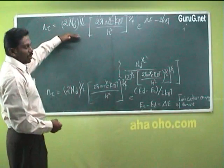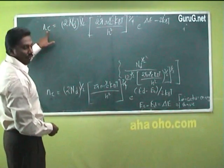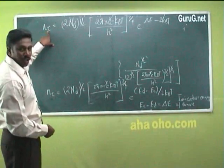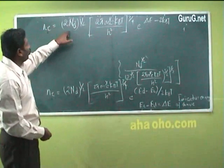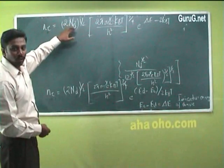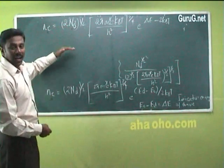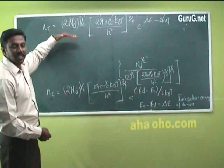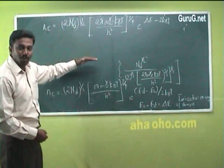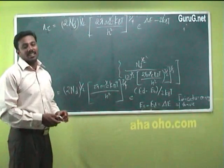From this equation, what we can understand is that the density of electrons in the conduction band is proportional to the square root of the donor concentration. It is proportional to the square root of the donor energy level, and if the temperature increases the Fermi energy level comes below and it approaches the intrinsic region.